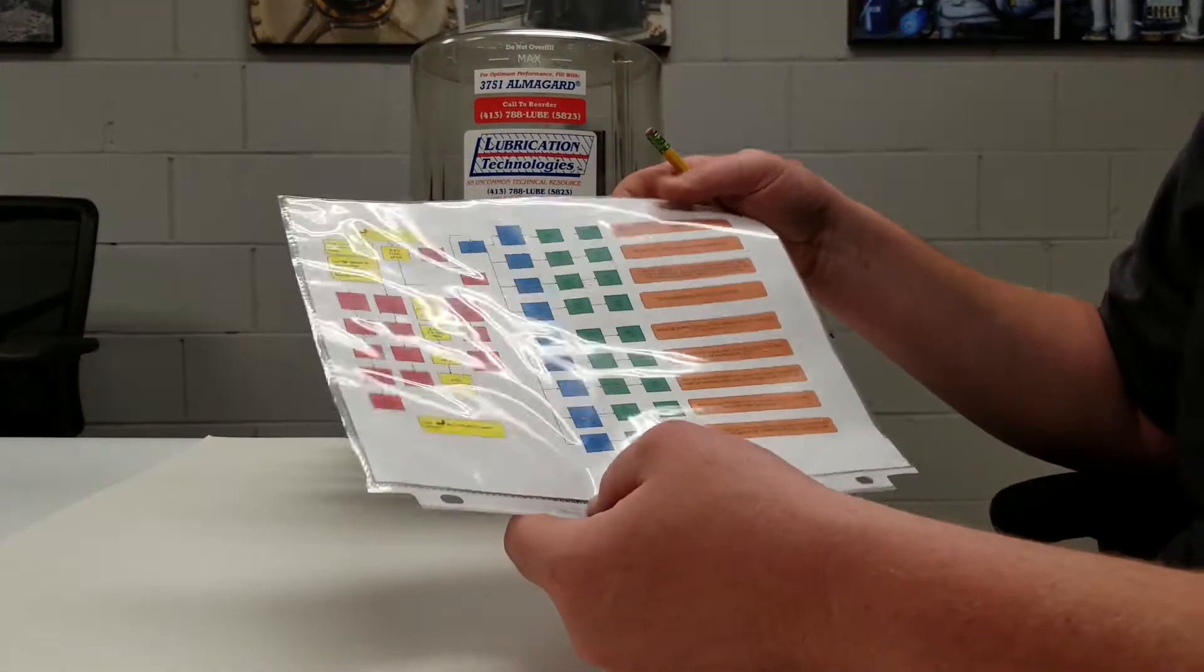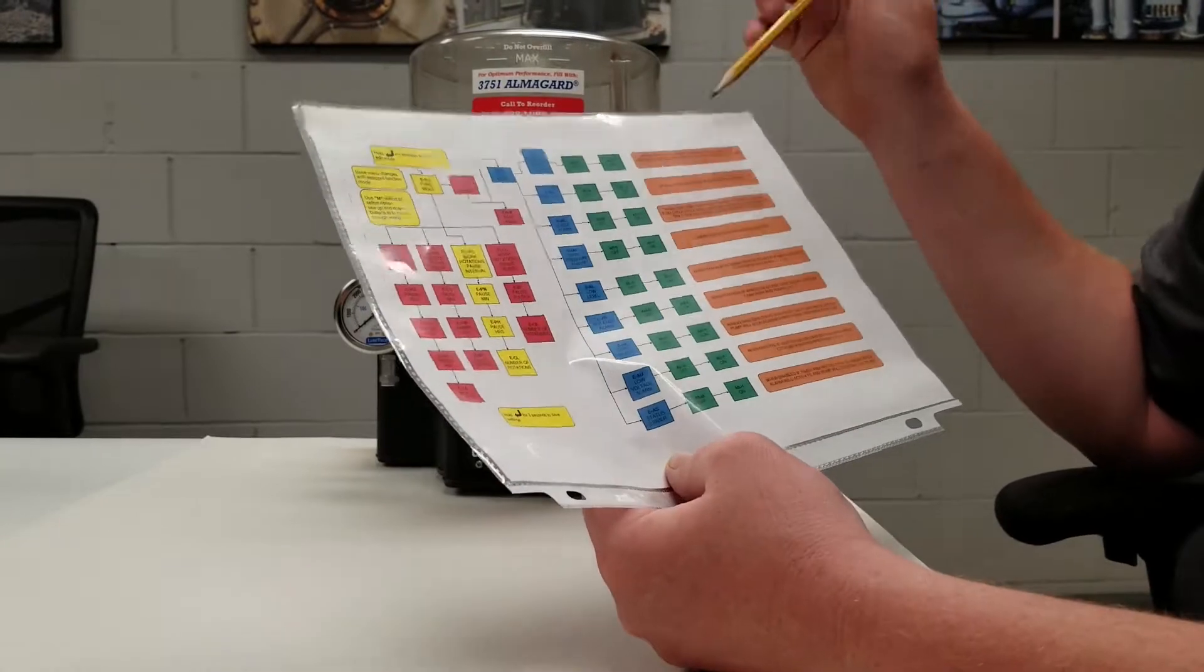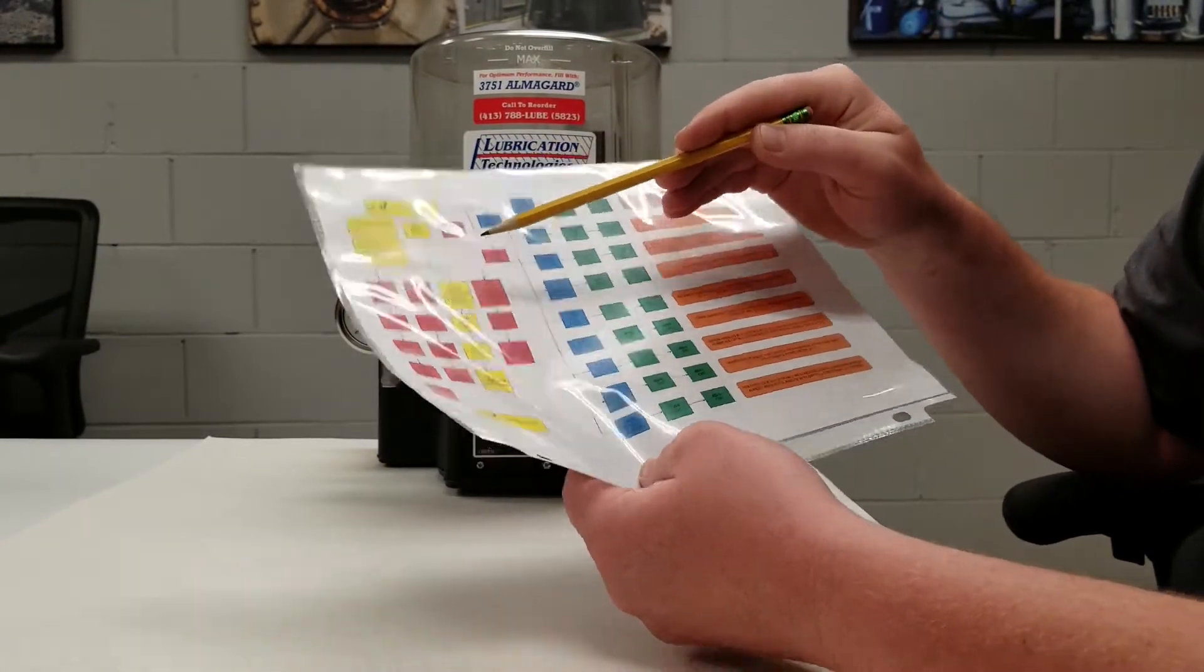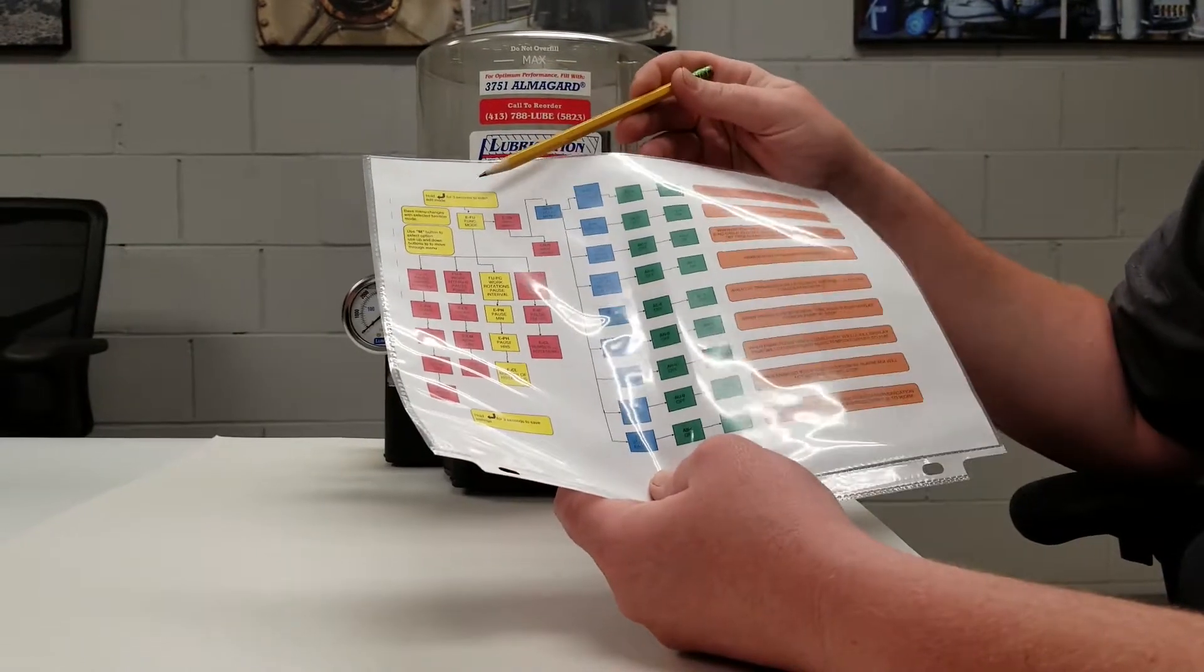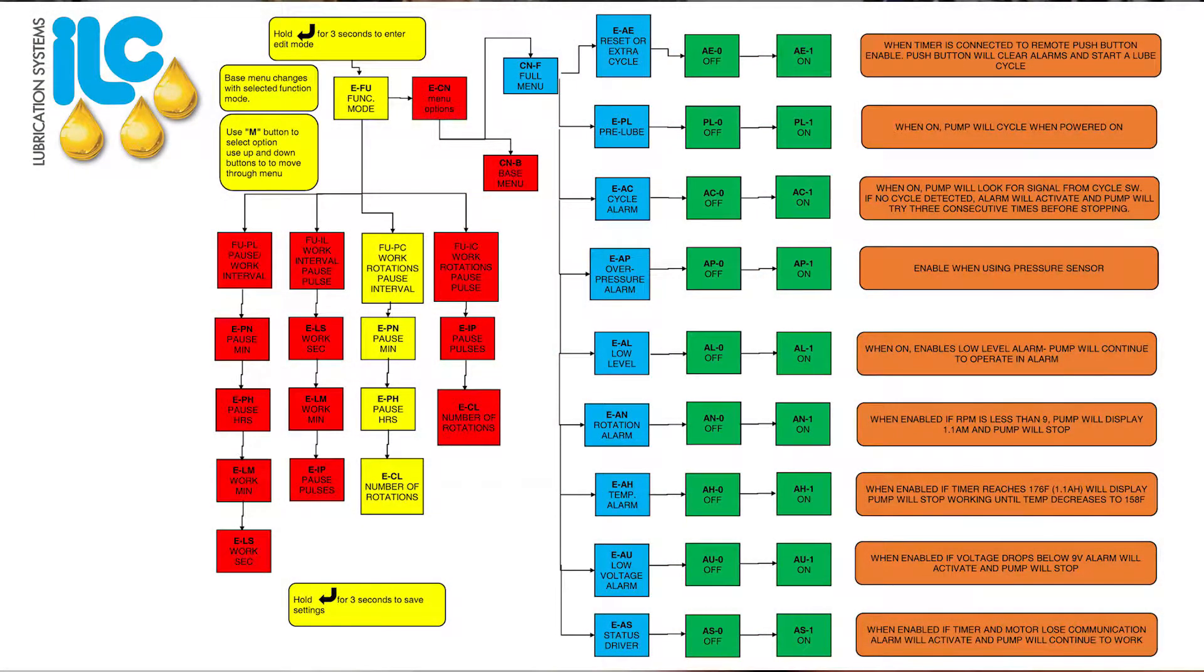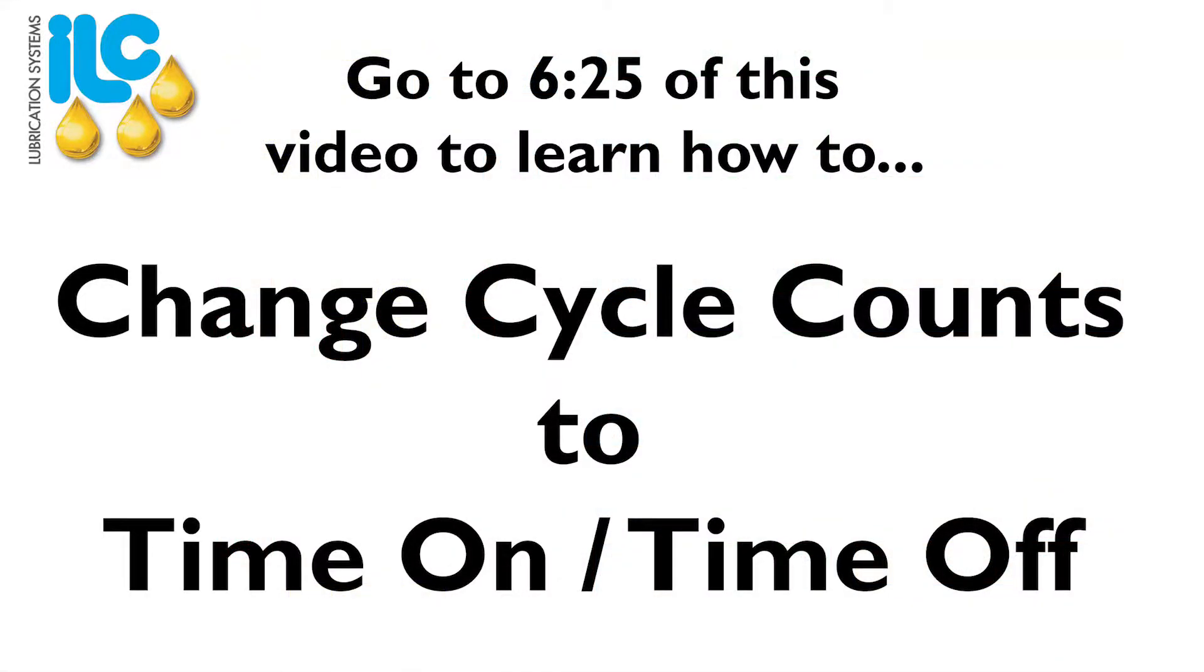So we have a document that we can send out to our customers that will go over the steps in the flow chart as we just went over to change your rotation count and they start with holding the enter button for three seconds and it'll walk you through each individual step. To change the rotation count you can see here we've highlighted the steps in yellow and we will also do a separate video to tell you how to change your time on and time off if that is the way that your pump is programmed.